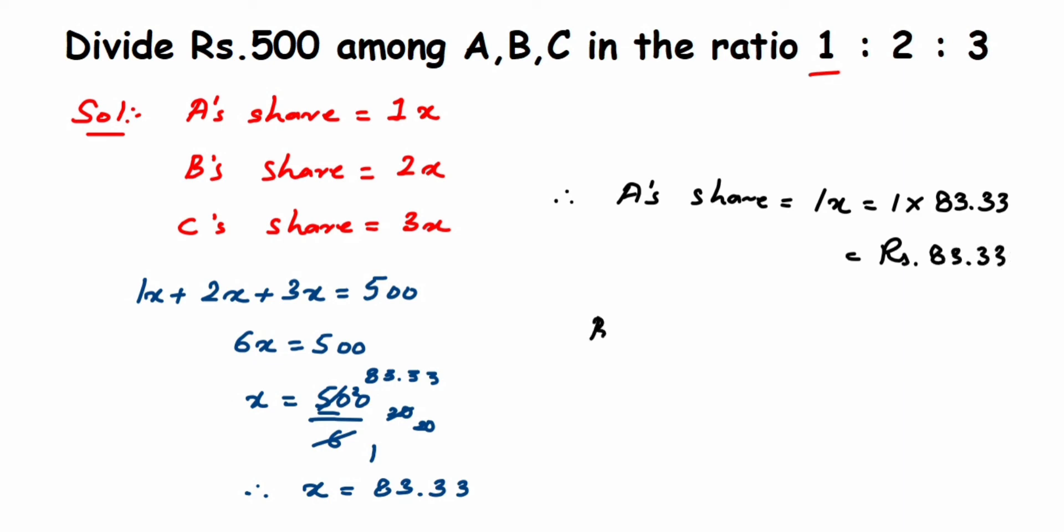Next, B's share is equal to 2x, so 2 × 83.33 = 166.66. C's share is 3x, so 3 × 83.33. We'll get 249.99, approximately we can say 250.